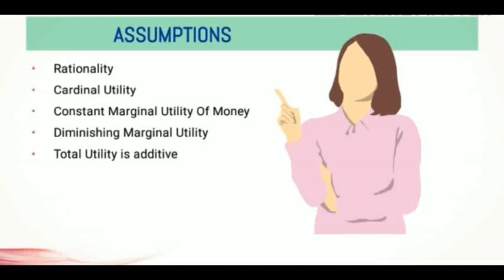The third assumption is constant marginal utility of money. This is necessary if the monetary unit is used as a measure of utility, since the essential feature of a standard unit of measurement is that it must be constant. If the marginal utility of money changes as income increases or decreases, the measuring rod for utility becomes like an elastic ruler — inappropriate for measurement. The fourth assumption is diminishing marginal utility: the utility gained from successive units of a commodity diminishes. In other words, the marginal utility of a commodity diminishes as the consumer acquires larger quantities of it.